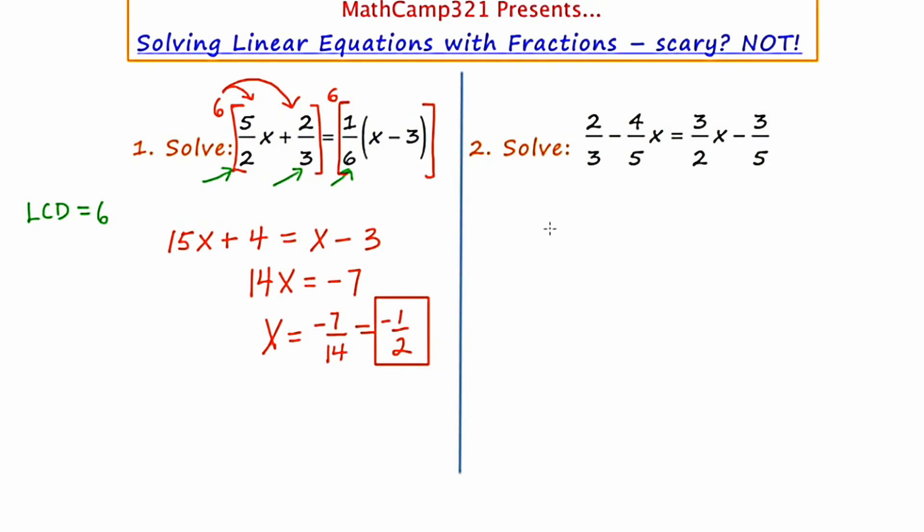Two thirds minus four fifths x equals three halves x minus three fifths. And again, the first thing I'm going to do is focus on those denominators, the three, the five, and the two. Okay, the LCD with a two and a three and a five is going to be 30.